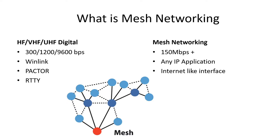So mesh networking. We have HF, VHF, UHF digital modes. We have 300 baud, 1200, 9600 — that's your typical packet. It works great for text. You're not able to send images easily; you could do slow scan TV for images, but it's slow. It's good for long-distance, non-line-of-sight stuff where you're sending something across the state. It's not too bad, especially for email and things like that.